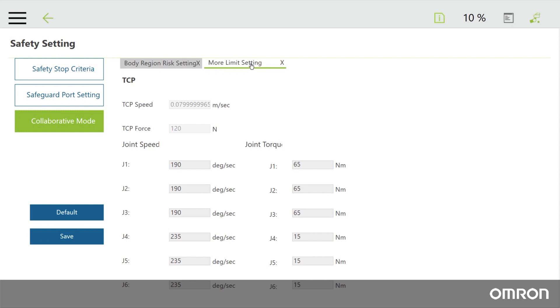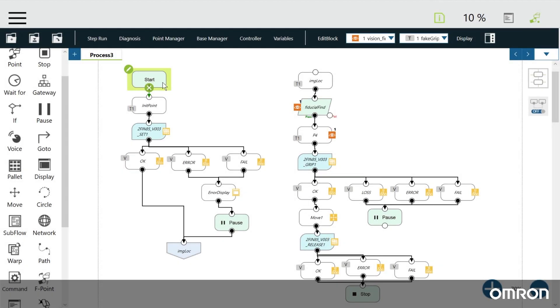This concludes video 2 of the Omron TM series tutorials. In the next video, video 3, we will show you how to use the flowcharts to start programming useful motions.